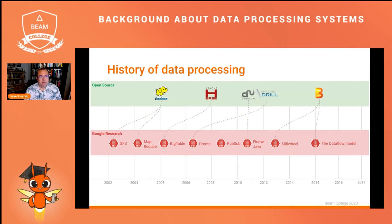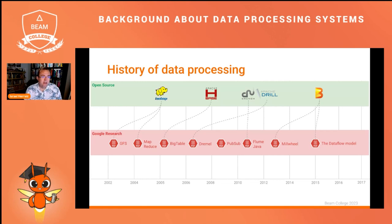Here we see all the papers coming from Google Research about data processing, from the first ones about the Google File System, MapReduce, and other data technologies, ending up in Apache Beam, that was born in 2015. All these technologies that were published as papers were also implemented as open source — not by Google, but by others. Like Hadoop, for instance, was done by Yahoo. These fundamentals are actually still valid for how Apache Beam works on top of the different runners.